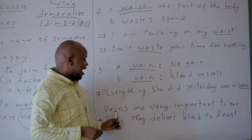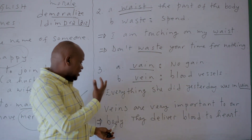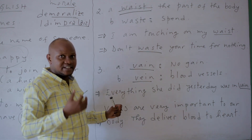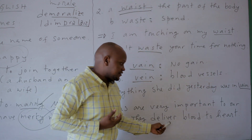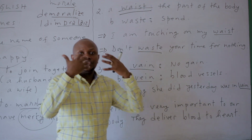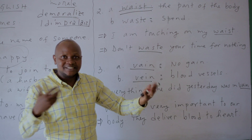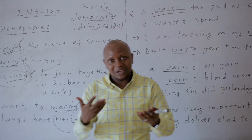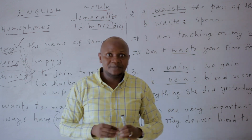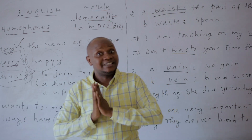But here you can say: veins are very important to our body. Veins are very important to our body — they deliver blood to the heart. Then you should know all these homophones if you want to speak English very fluently. Please try your best to learn these lessons we are giving you.